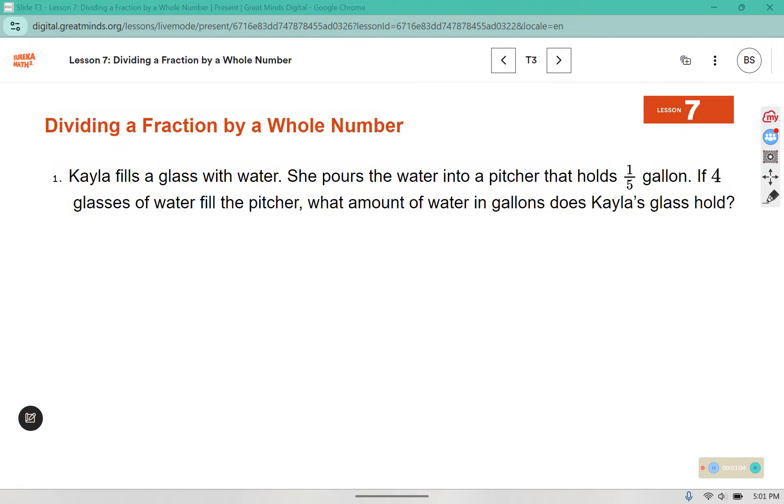In problem 1, Kayla fills a glass with water. She pours the water into a pitcher that holds 1/5 of a gallon. If four glasses of water fill the pitcher, what amount of water in gallons does Kayla's glass hold? So we're going to split 1/5 of a gallon into four glasses. Again, leave, change to multiplication, and then change four into its reciprocal. We're flipping it over. 1 times 1 is 1, 5 times 4 is 20. So she can fit 1/20 of a gallon in each glass.